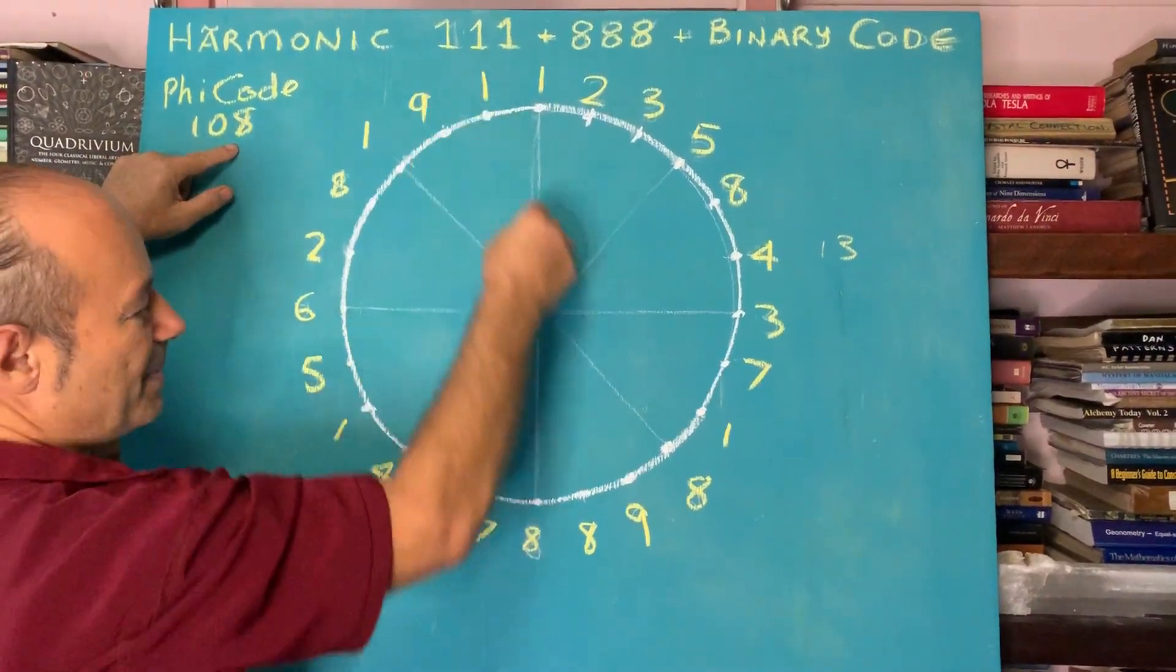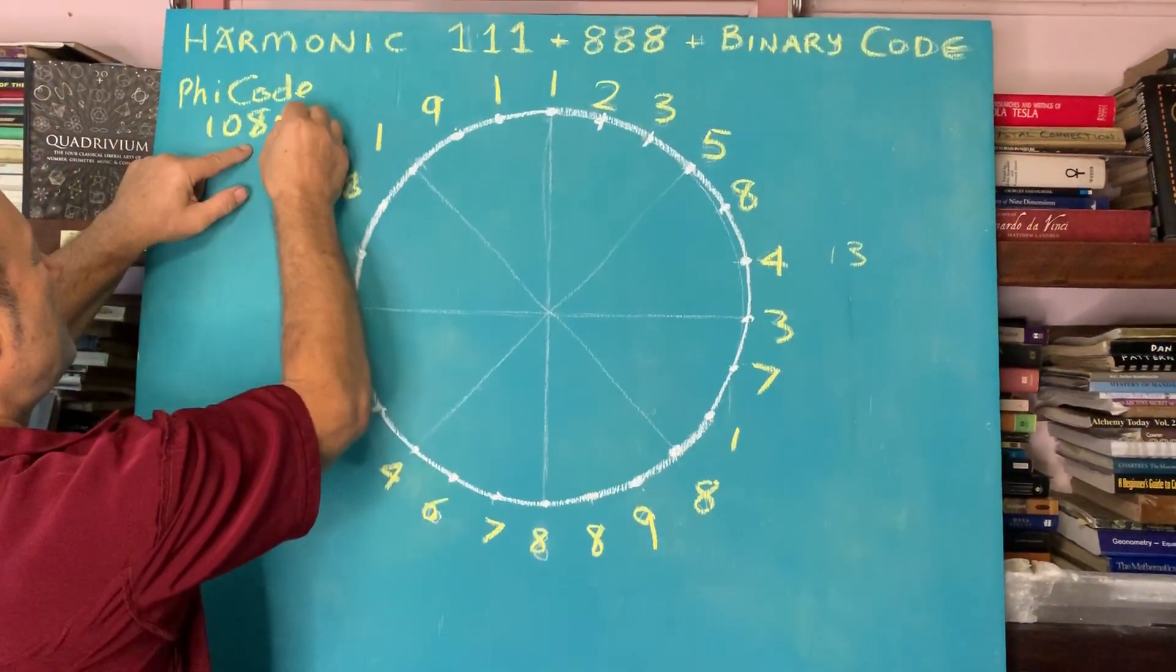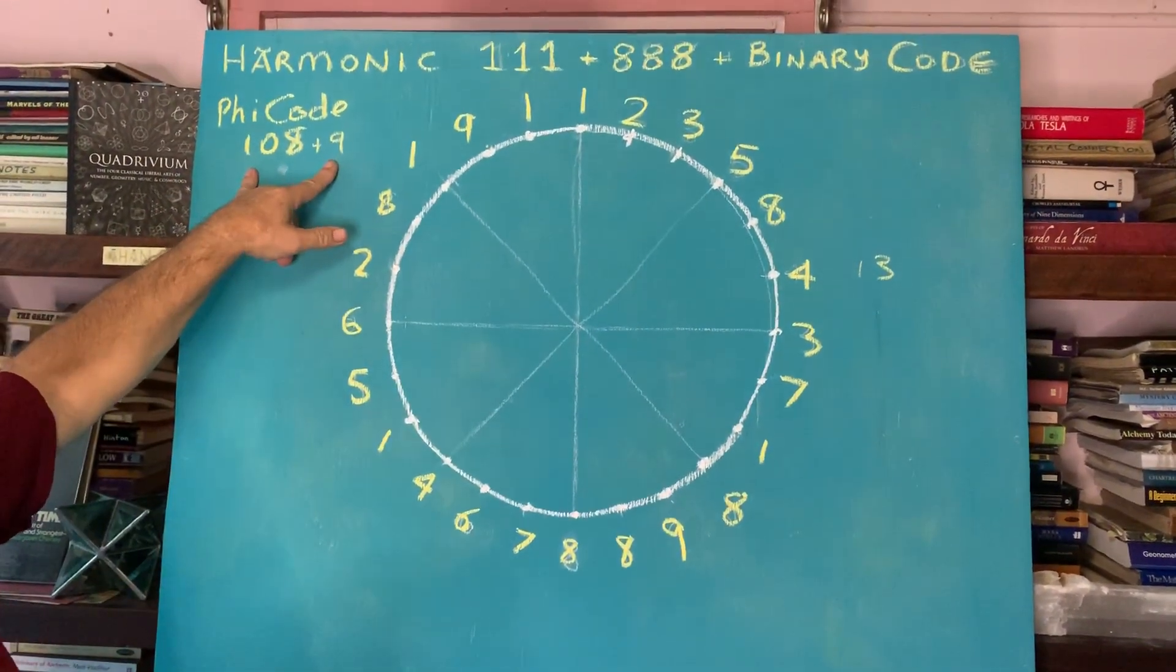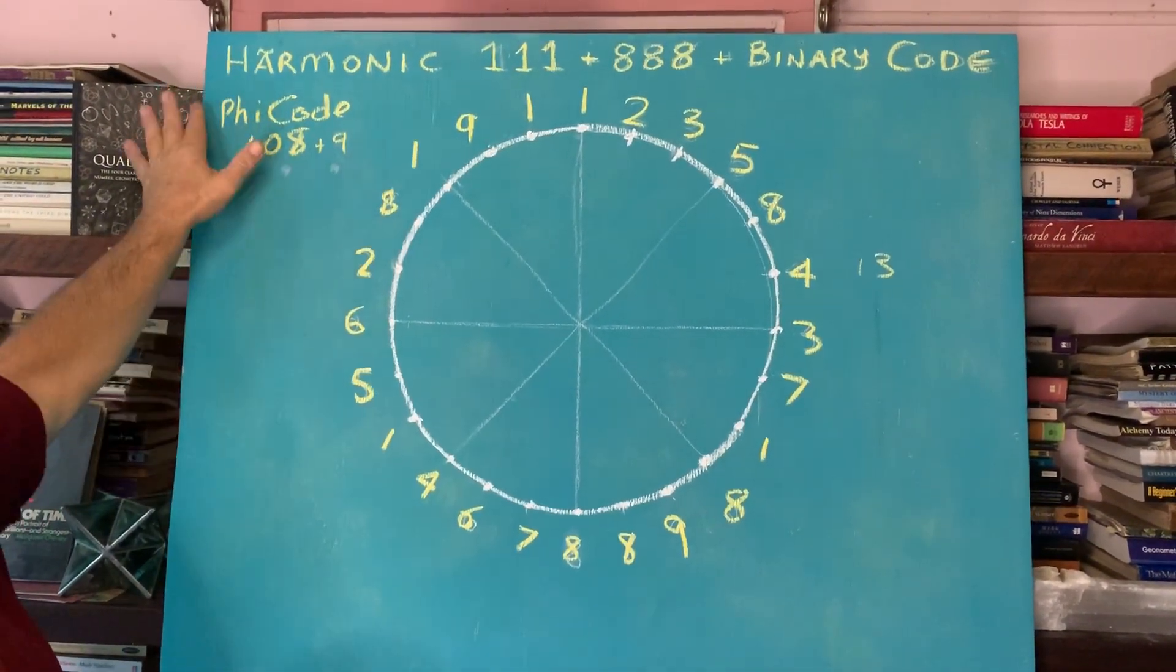But there's a nine here opposite another nine. There's two nines. So there is another nine that joins a secret, but we're just calling it the 108 code or PC1.